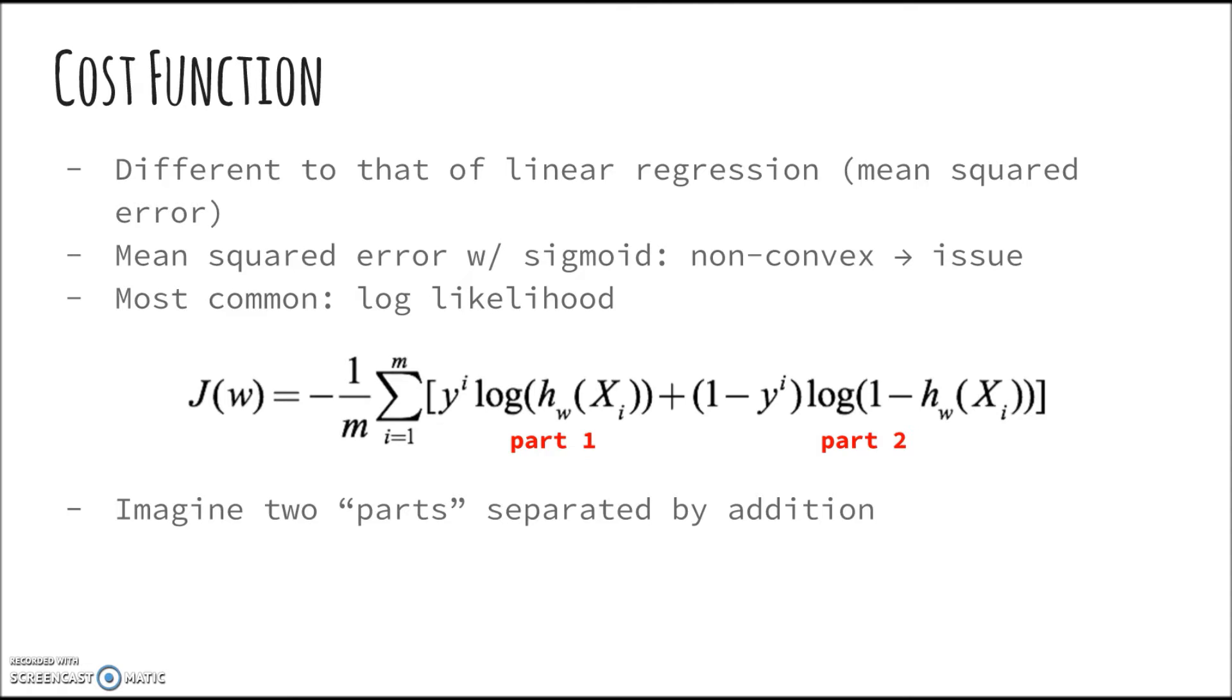However, we can break the inner sum down into two parts, part 1 and part 2. In part 1, we multiply the logarithm of the hypothesis function by output y_i, and in part 2 we multiply (1 - y_i) by the logarithm of 1 subtracted by the hypothesis function. Let's expand on what this does in the next slide.